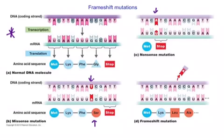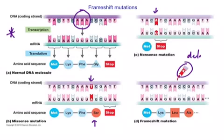The third kind shown here is the frameshift mutation. In this particular case, you can see in the normal sequence there are three A bases in a row. In this example of a frameshift mutation, one of those bases is deleted — maybe spontaneously or induced by a mutagenic agent.